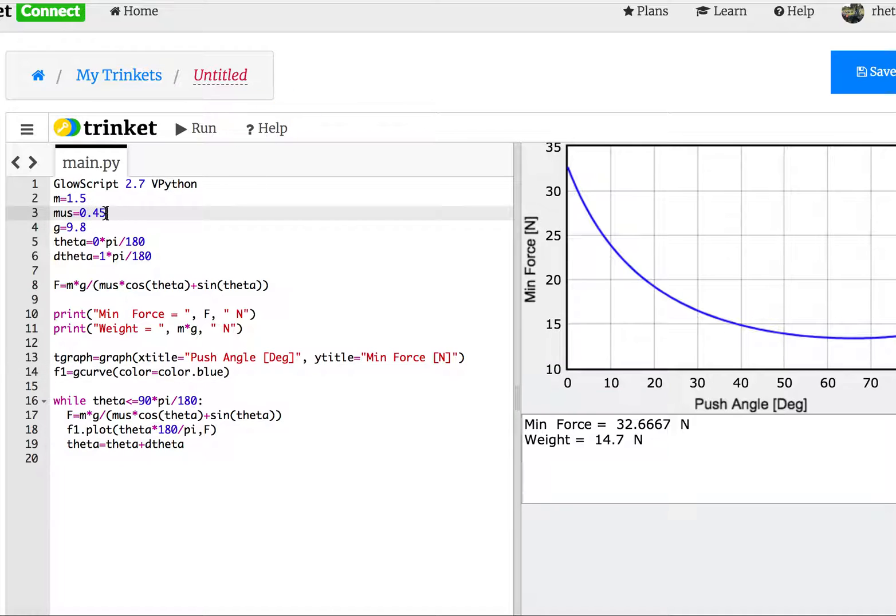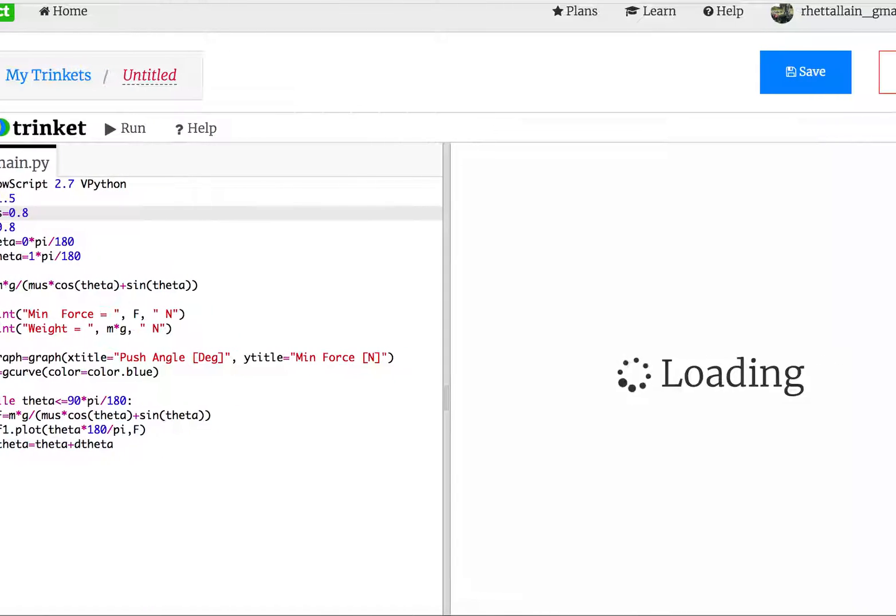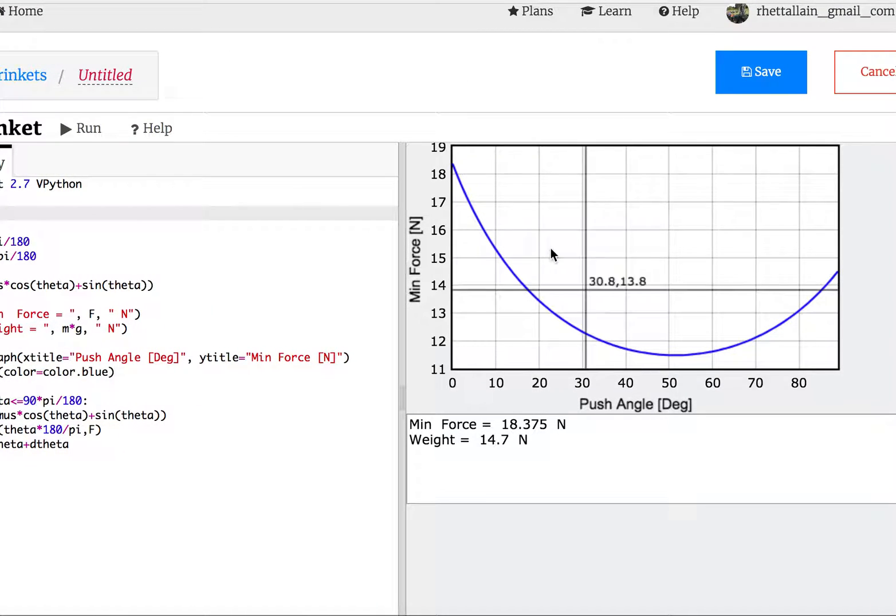Now let's try something else. What if I change this coefficient to something high, 0.8, and run it? Now you really see it. I'm going to use the least force at around 49.4 degrees. So there's some minimum force that you could get to hold that thing up. And it's less than the weight because you're using part of friction, but you're also having to push up. So you're losing some friction. So there's a balance point there.